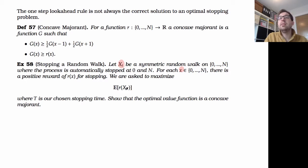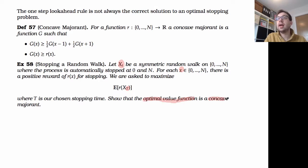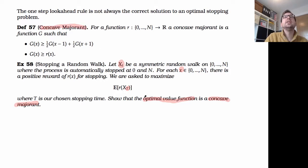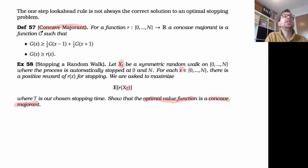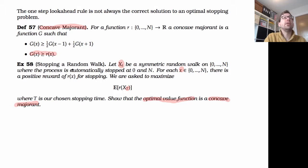We're asked to maximize the expected reward from stopping at time T. The first thing we want to do is characterize the solution, and specifically we're asked to show that the optimal value function is something called a concave majorant. So let's look at the definition: for a function r mapping {0,...,N} to the positive reals, a concave majorant is a function g such that g(x) ≥ r(x) — in that sense it's a majorant — and it's also concave, meaning g(x) ≥ (1/2)g(x-1) + (1/2)g(x+1).